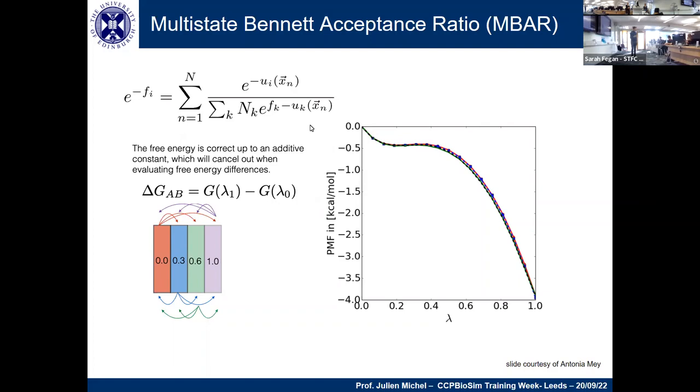When we do this, we get free energies which are correct up to some additive constant, but we don't care because we only care about free energy differences. We can add the terms together to get the derivative of free energy with respect to lambda. This shows how free energy changes as we move along in the lambda coordinate. The final quantity of interest is just the difference between lambda zero and lambda one.